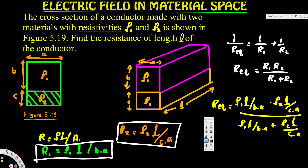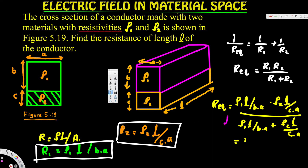In the numerator we can take l and a common. If we take l over a common, the l and a in the numerator terms cancel, leaving rho1 over b times rho2 over c. The same l and a factor appears in the denominator.